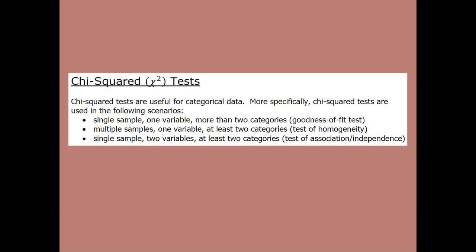Another thing that we did with proportions was comparing groups. We had confidence intervals and hypothesis tests for a difference of proportions. But what if you want to compare groups and there are more than two of them? Then that's not really going to work, and that's another scenario where chi-squared tests are going to be helpful.